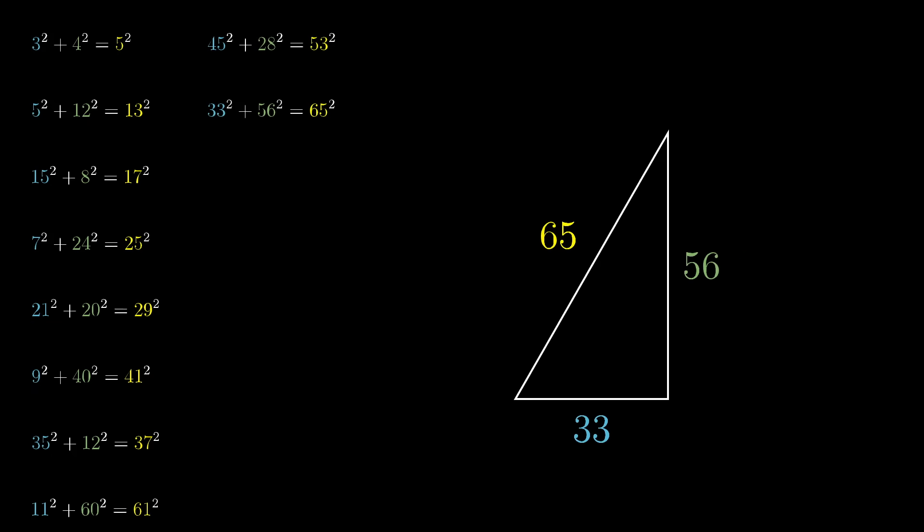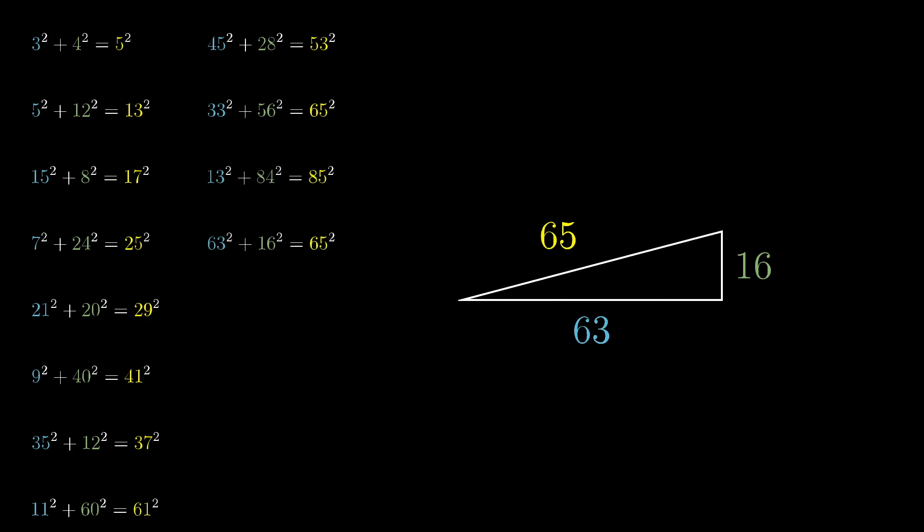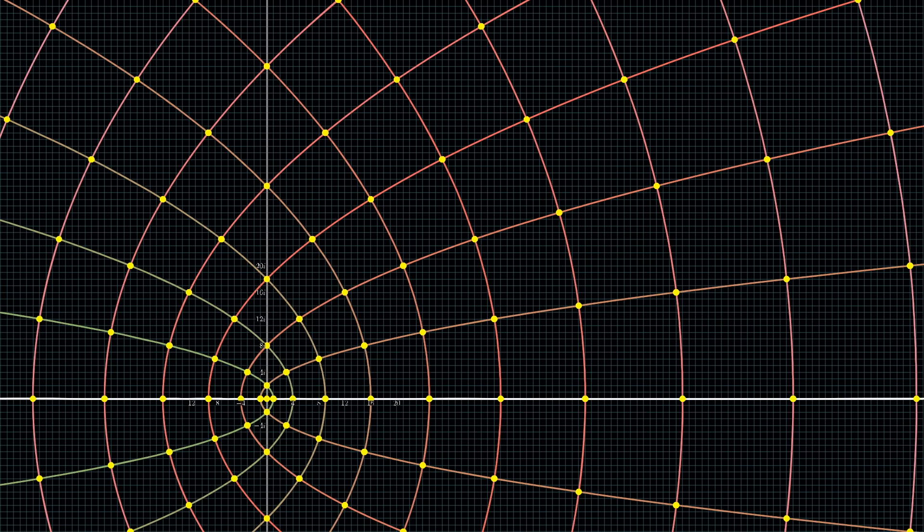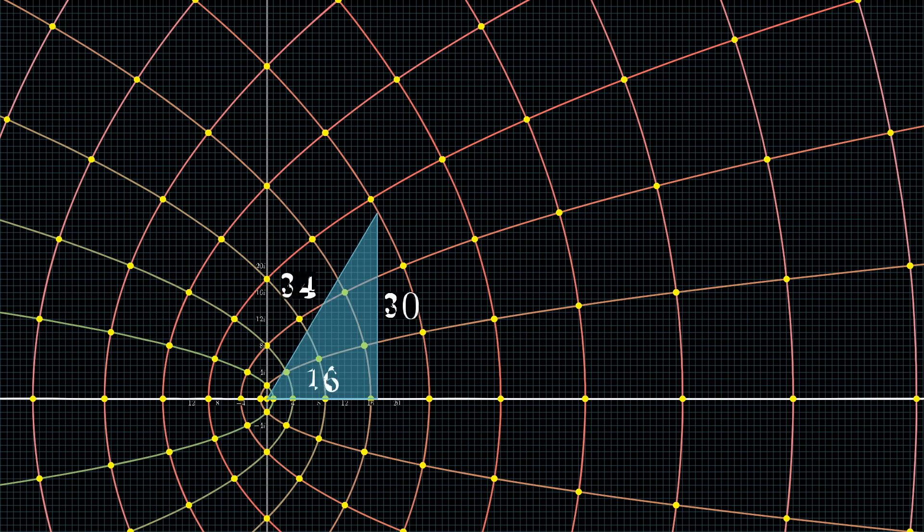What I love about this is that usually when you view Pythagorean triples just on their own, they seem completely random and unconnected, and you'd be tempted to say there's no pattern. But here, we have a lot of them sitting together really organized, just sitting on the intersections of these nicely spaced curves.